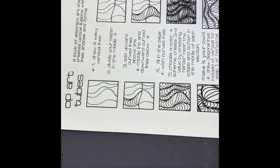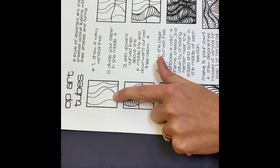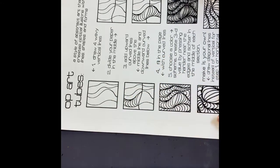So we're gonna do a little bit of flipping back and forth between our packet. So it says number one: start with four wavy vertical lines, and I want you to remember that vertical means up and down.